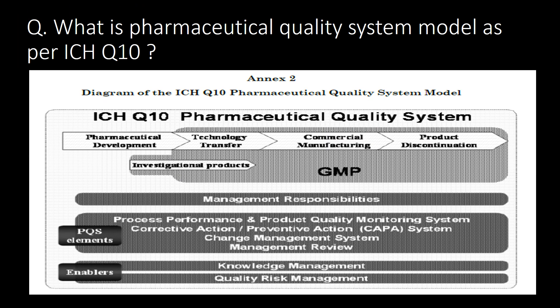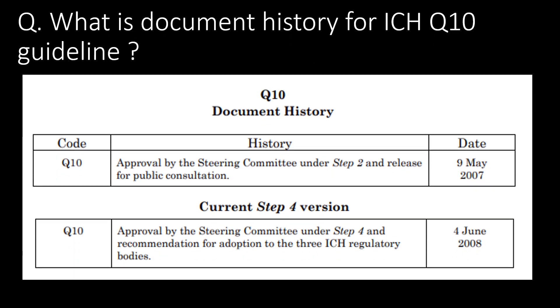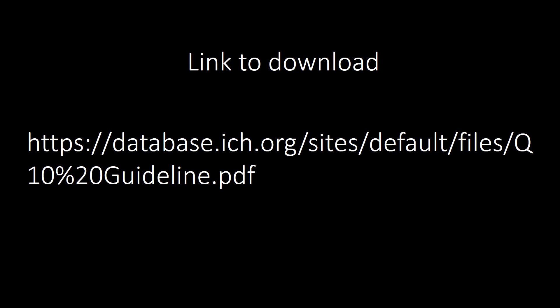What is the pharmaceutical quality system model as per ICH Q10? You can refer to the diagram below for the ICH Q10 pharmaceutical quality system model. The last and important question: what is the document history for the ICH Q10 guideline? You can refer to the document history below. Here is the link to download the ICH Q10 guideline — you can find it in the description box and comment section.